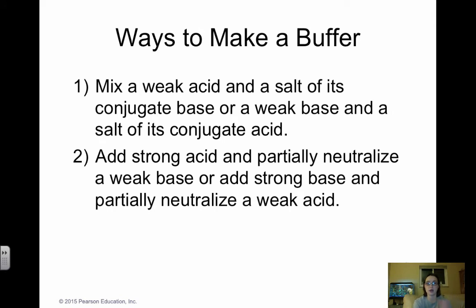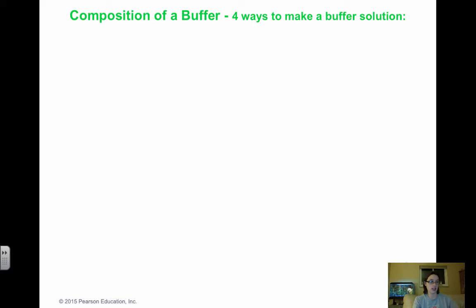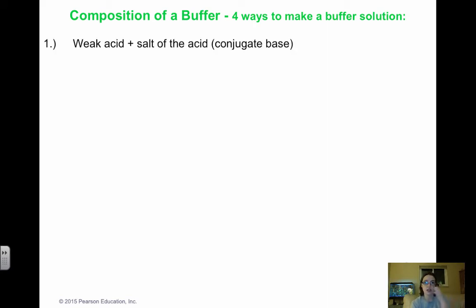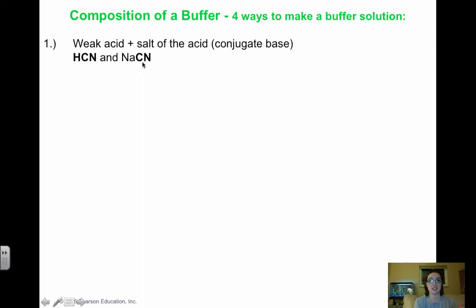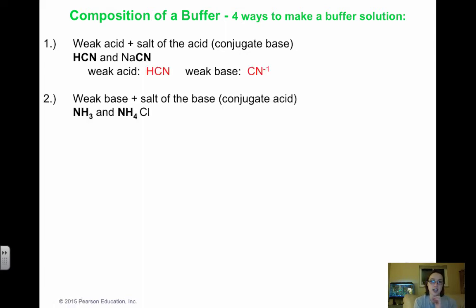Ways to make a buffer: one way is to simply mix the weak acid and its conjugate base, or a weak base and its conjugate acid. For example, HCN is a weak acid and NaCN provides the CN⁻ conjugate base — sodium is neutral, so we ignore it. Or we can have a weak base and its conjugate acid, such as NH₃ (ammonia) and NH₄Cl (ammonium chloride) — Cl⁻ comes from a strong acid, so it's neutral and we ignore it, making NH₄⁺ the conjugate acid.